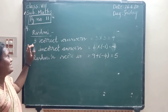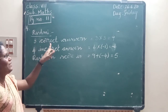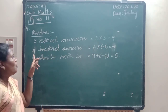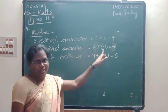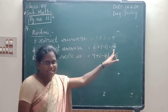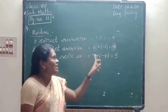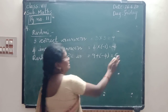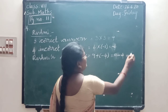Now Rashmi. How many correct answers did she attempt? 3 correct answers. 3 into 3 equals 9 marks. Next, 4 incorrect answers. 4 into minus 1 equals minus 4. Plus into minus is minus. Rashmi's score is 9 plus minus 4. 9 minus 4 equals 5.